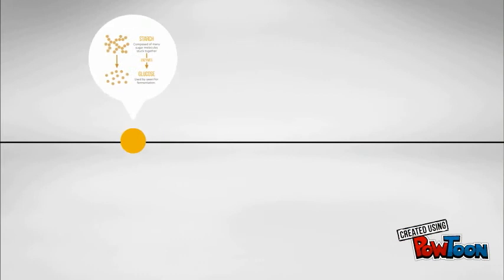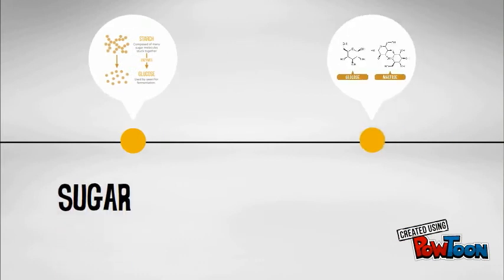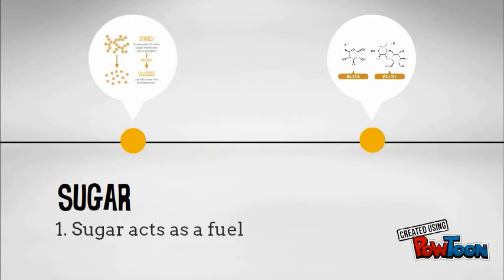Sugar has different purposes beyond making the bread sweet. It acts as a fuel for the yeast in its fermentation reaction. Sugar also activates amylase, and the starch — which is composed of many molecules stacked together — is converted into maltose, which is in fact glucose.